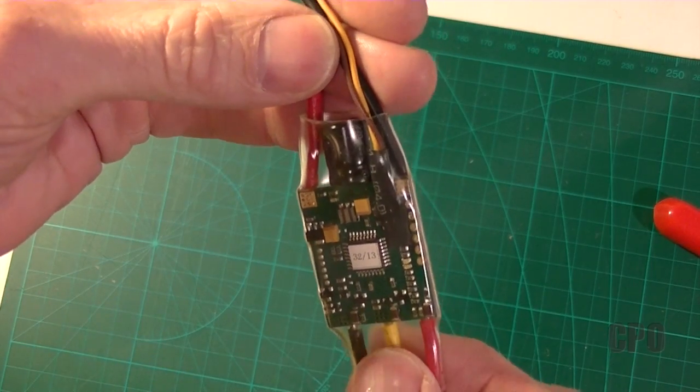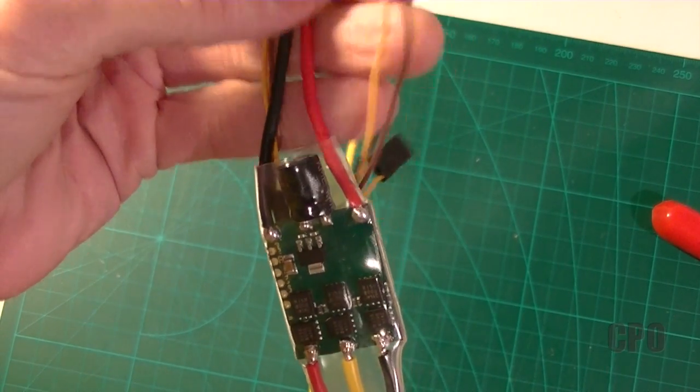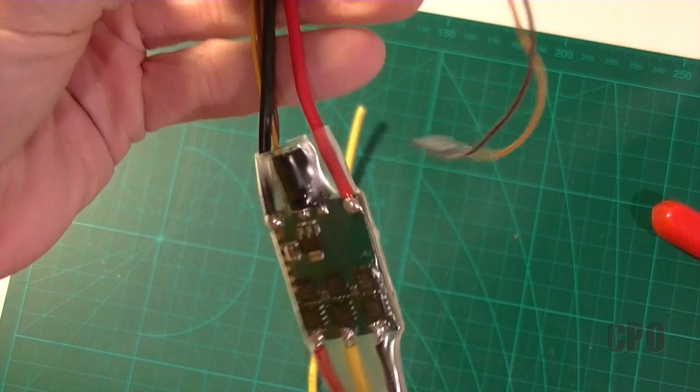So here's the finished product. I just do this two more times, except on one of them I leave the power wire on the flight controller cable. That'll be the ESC I use for motor number one.